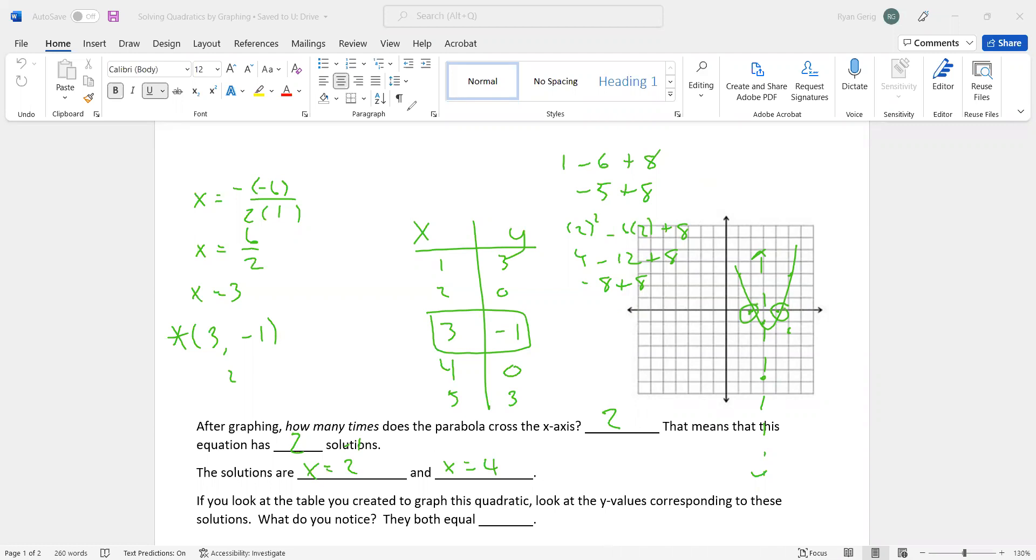If you look at the table that we created, look at the y values corresponding to those solutions. So x = 2, x = 4. Look at the y values. We're looking for where y equals 0. That is what we're doing new here. It's just solving. So finding where it crosses the x-axis is essentially what we're doing here.